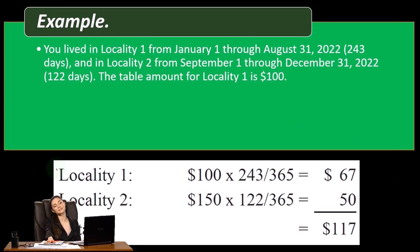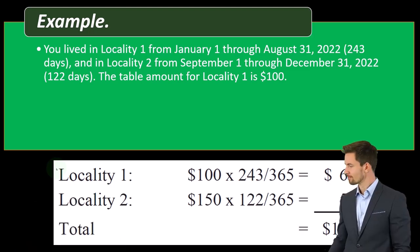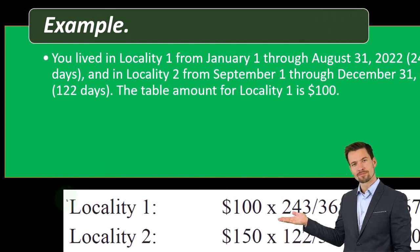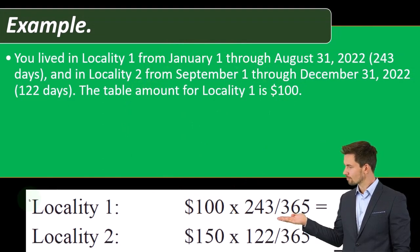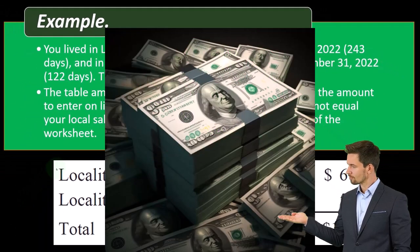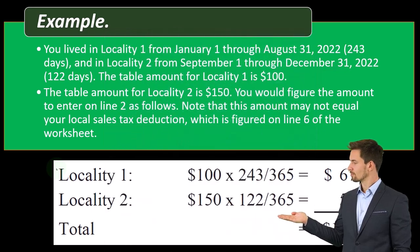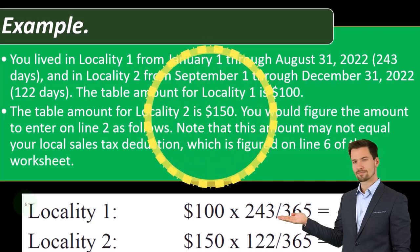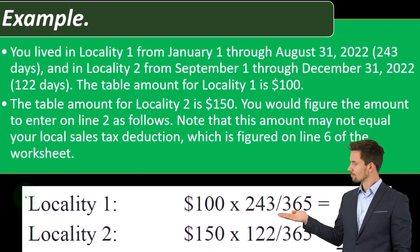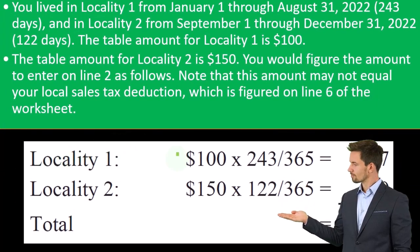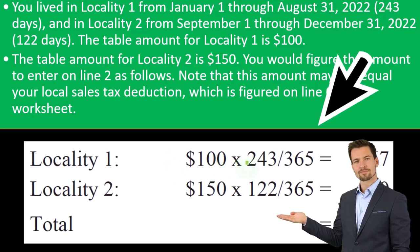Let's take a look at an example — a similar kind of process. You lived in locality one from January 1st through August 31st, 2022 — 243 days — and in locality two from September 1st through December 31st, 2022 — 122 days. The table amount for locality one is $100 and for locality two is $150. You would figure the amount to enter on line two using those table amounts multiplied by their respective fractions. Note that this amount may not equal your local sales tax deduction, which is figured on line six of the worksheet.